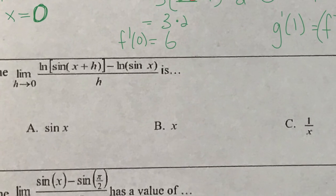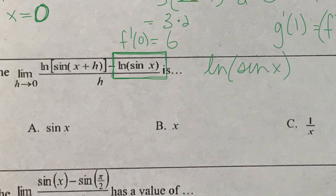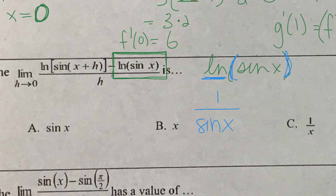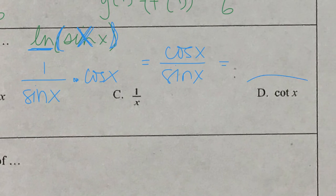This question asks for the derivative of natural log of sine x. We treat it as a chain rule problem. The derivative of natural log is 1 over x, so the derivative of ln(sin x) is 1 over sine x times the derivative of sine x, which is cosine x. So 1 over sine x times cosine x equals cosine over sine, which is cotangent x.